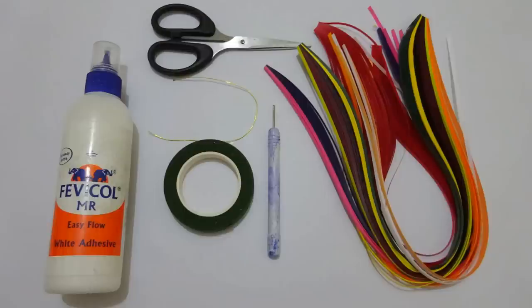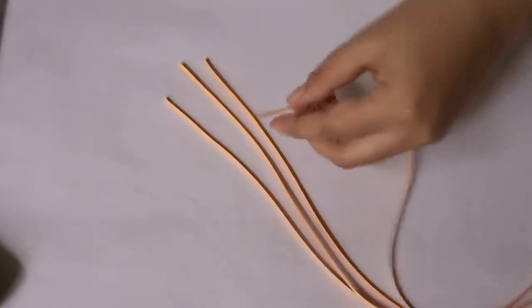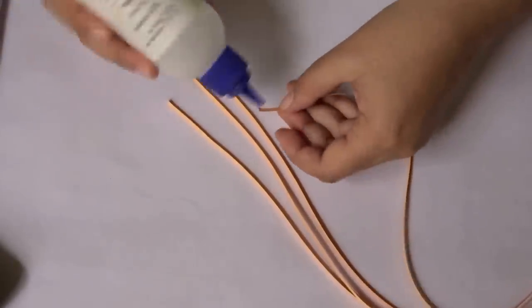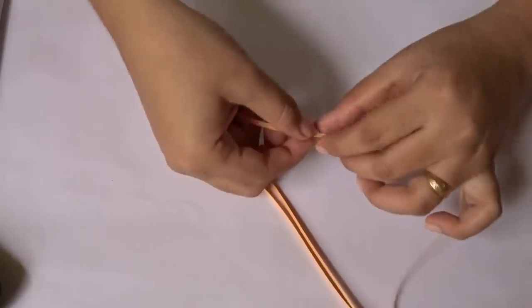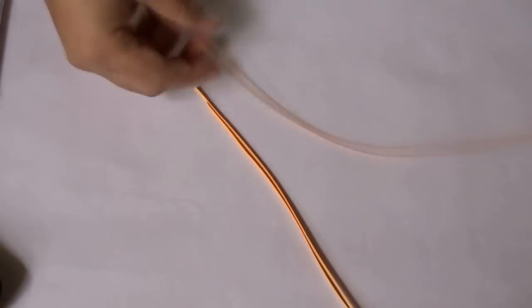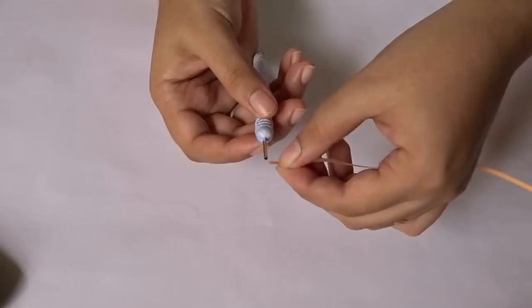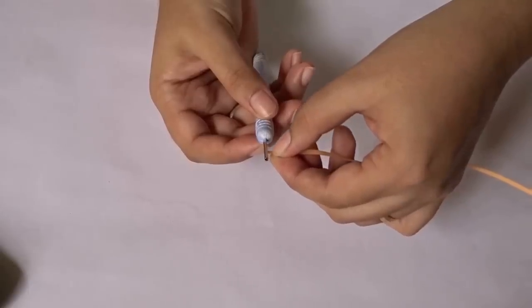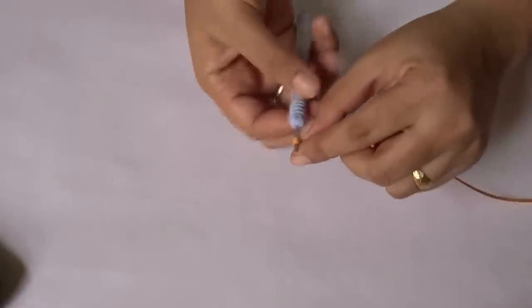Take four quilling strips, join them and make a long strip. Now take the rolling pin, insert the quill here and keep rolling it till the end.